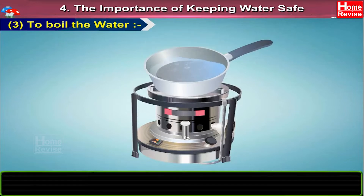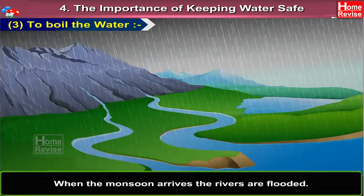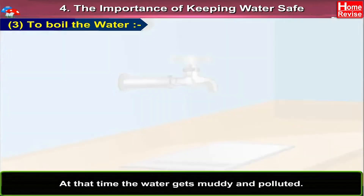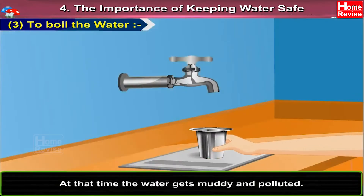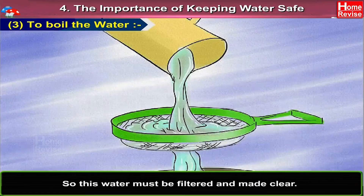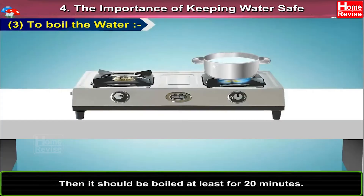Method 3: To Boil the Water. When the monsoon arrives, the rivers are flooded. At that time, the water gets muddy and polluted. So this water must be filtered and made clear. Then it should be boiled at least for 20 minutes.